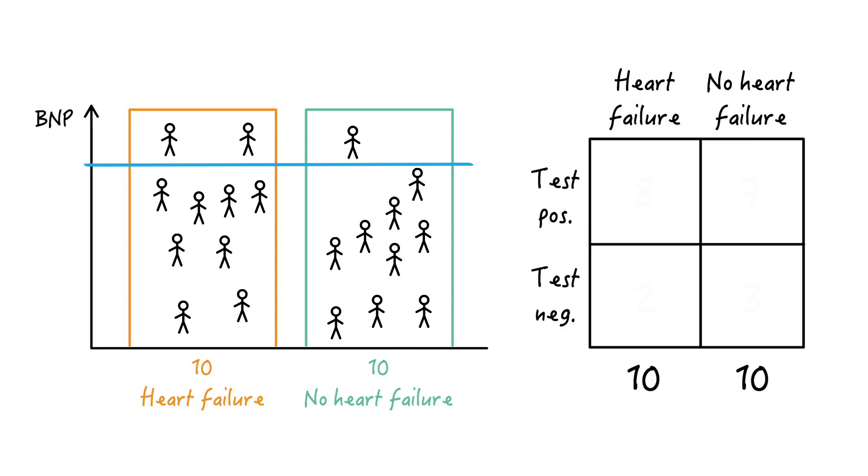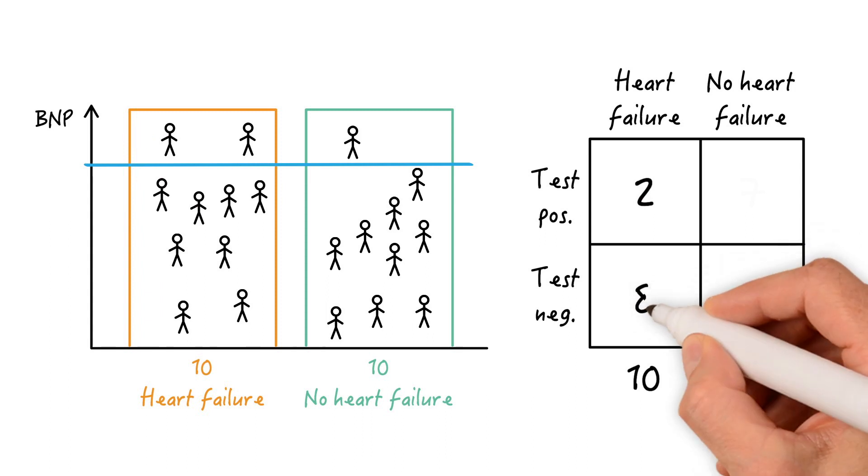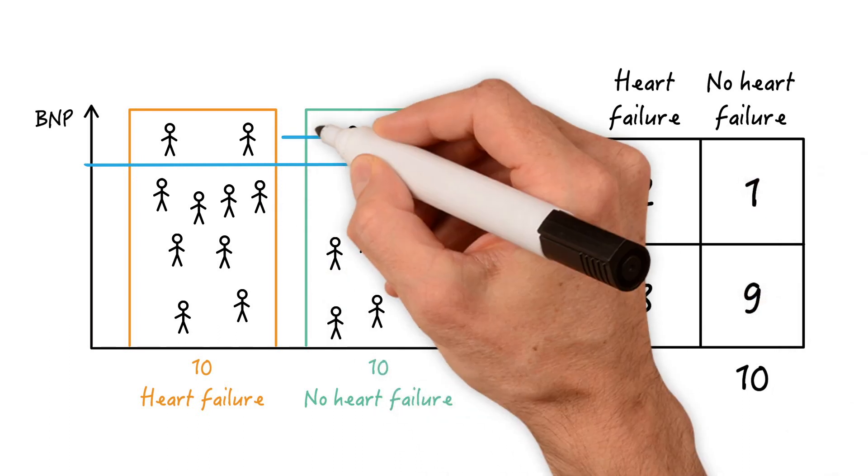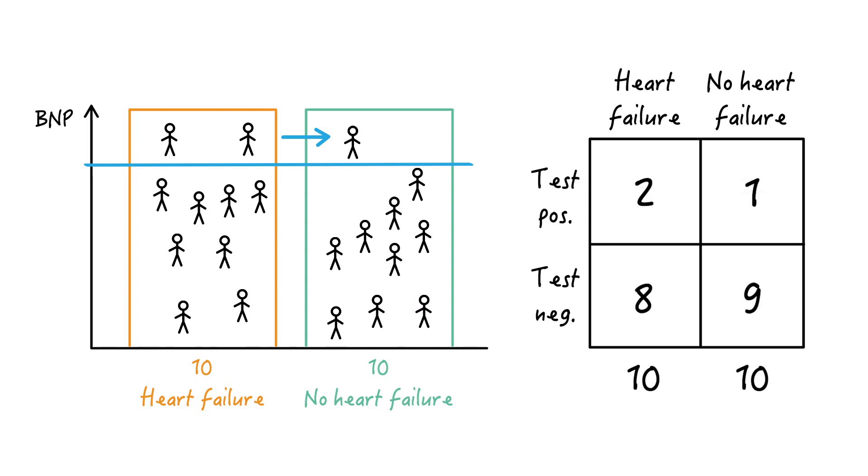What happens if we move the threshold to a much higher level? Well, in this case, we'd only pick up 2 diseased individuals or true positives and we'd miss 8 people or false negatives. Turning to the non-diseased, we'd correctly classify a much larger proportion of non-diseased individuals. So 9 out of 10 non-diseased would be correctly classified and only one individual would end up as a false positive.